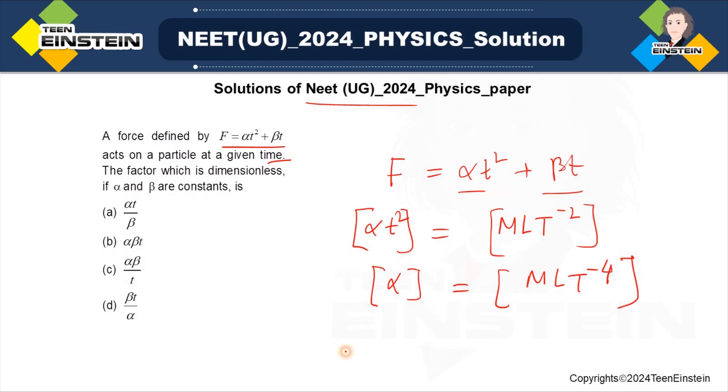Similarly, beta T also will have the dimension of force. So, what will be the dimension of beta? That is ML T to the power minus 3.